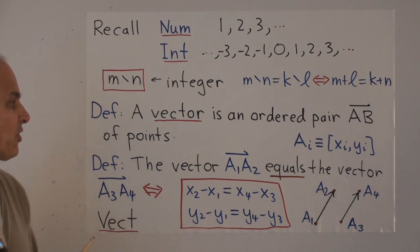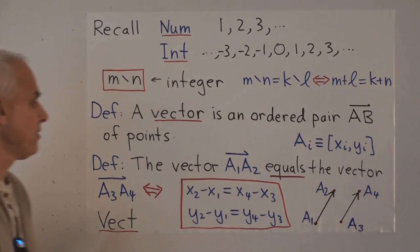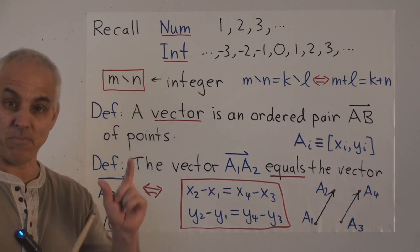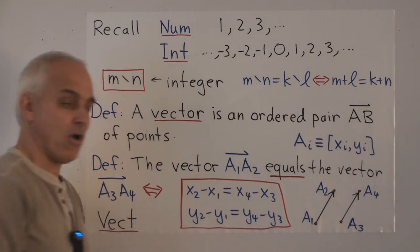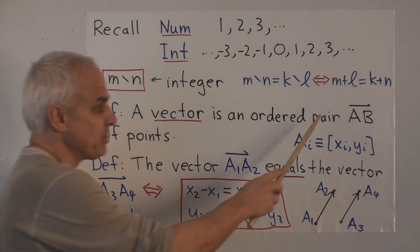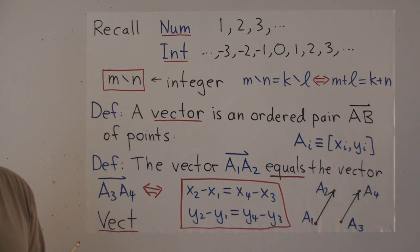Here's our official definition of what a vector is. A vector is an ordered pair, a, b, of points. So it's a pair of points. First one called a, and a second one called b. And our notation for it is having a little arrow on top of the pair a, b.